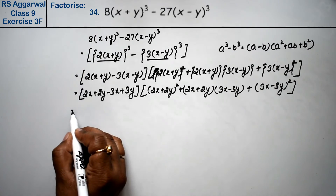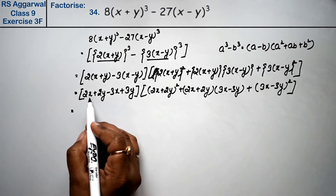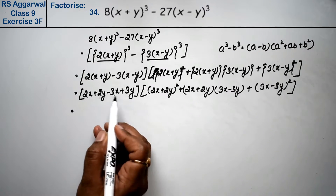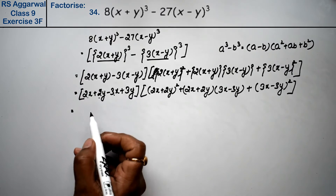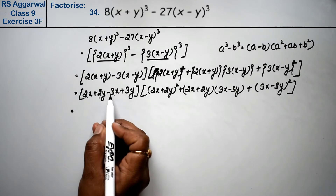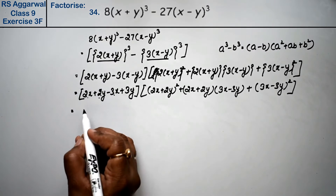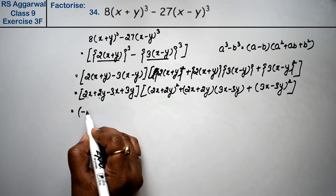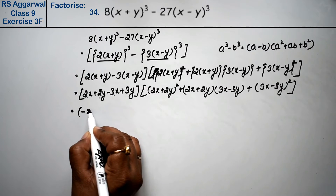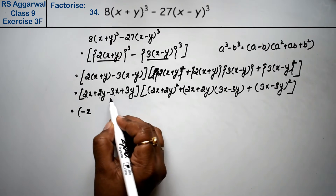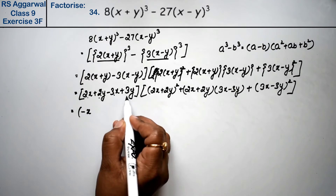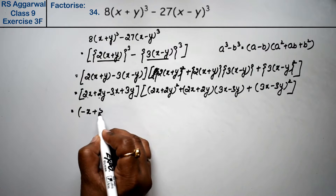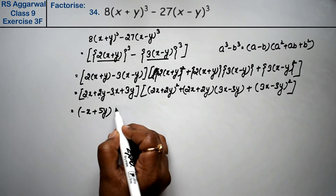Now see — x terms are together, y terms are together. This is plus, this is minus. So we can write this as (2x - 3y)² whole square. And the first bracket becomes minus x plus 5y.